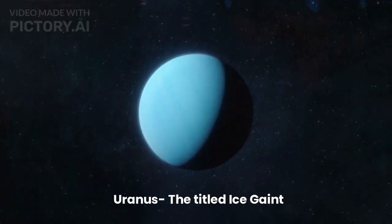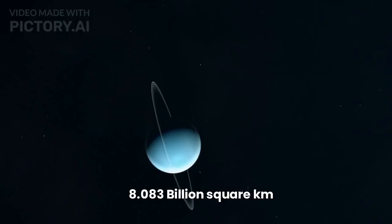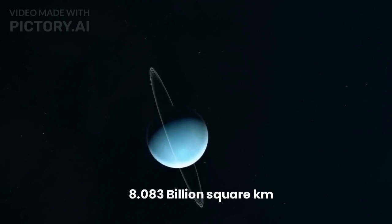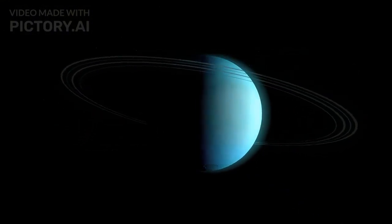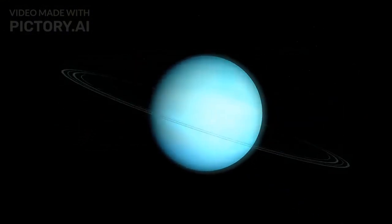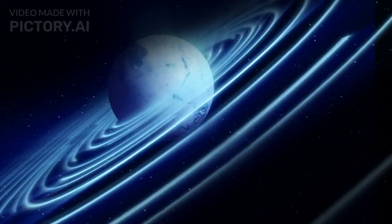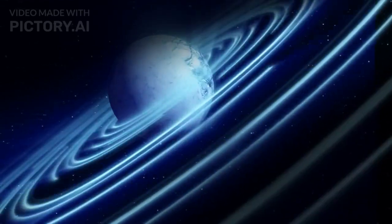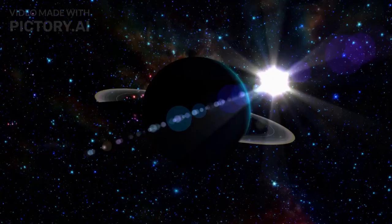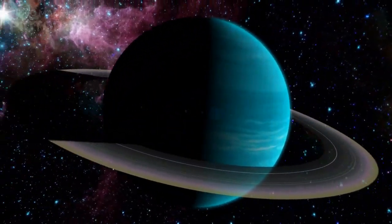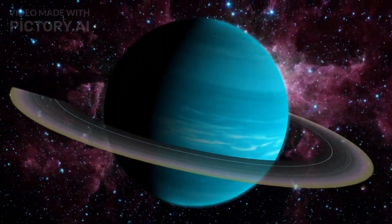Seventh, Uranus the Tilted Ice Giant. The surface area of Uranus is 8.083 billion square kilometers. Uranus is an ice giant with a unique characteristic, its axial tilt causes it to rotate on its side. This creates extreme seasons and peculiar magnetic field behavior. Its pale blue color results from atmospheric methane. Uranus has a system of rings and moons, including Miranda with its dramatic surface features.